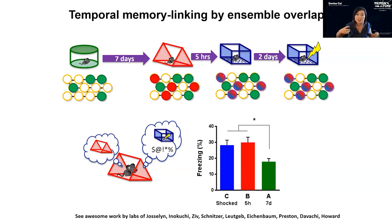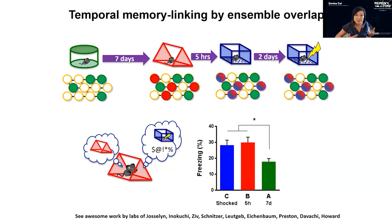I won't have time to go through all the exciting work on temporal memory linking, but if you're interested, check out the work of Sheena Josselyn's lab on emotional memories, along with Karl Deisseroth, Yanjiv Bhatt, Mark Schnitzer, Jill Leutgeb, and Howard Eichenbaum who characterized how place cells and time cells have these effects. Alison Preston and Lila Davachi have shown some of this in humans, along with collaborative work with Sarah Mednick, and Mark Howard has developed a theoretical framework.